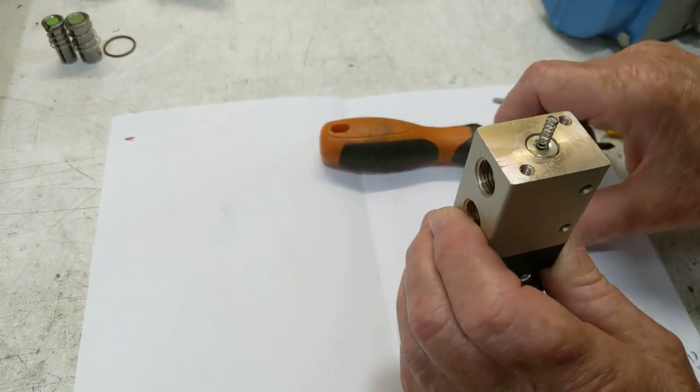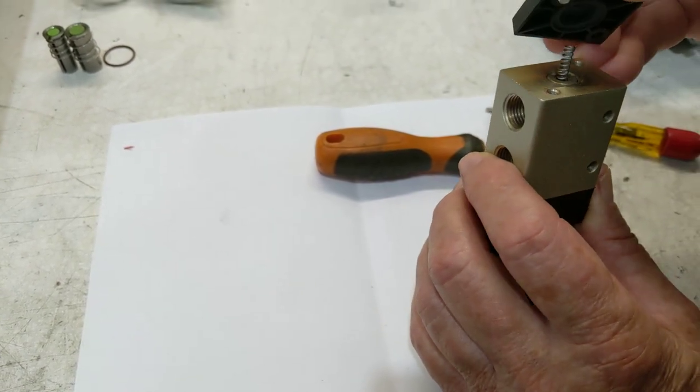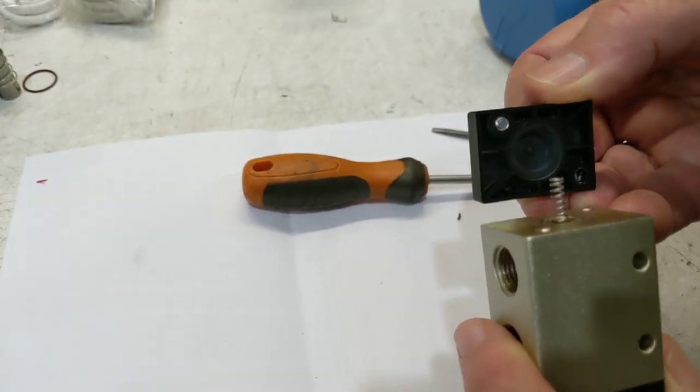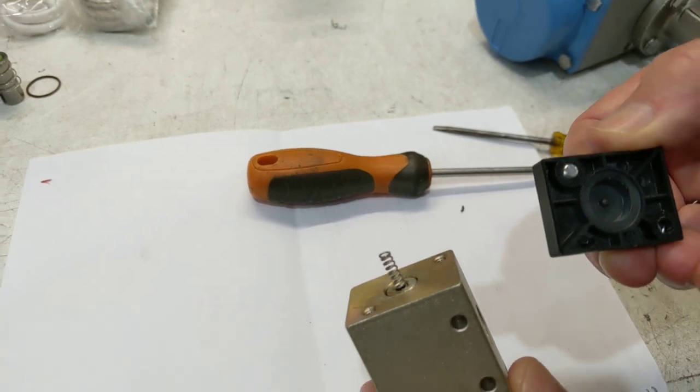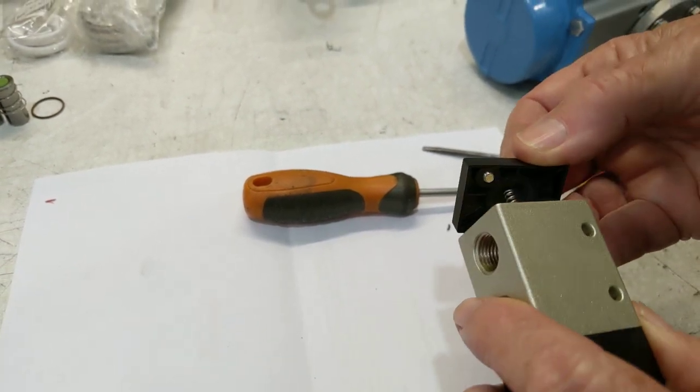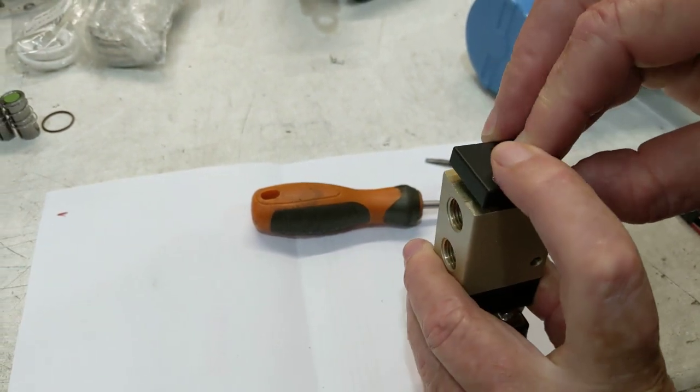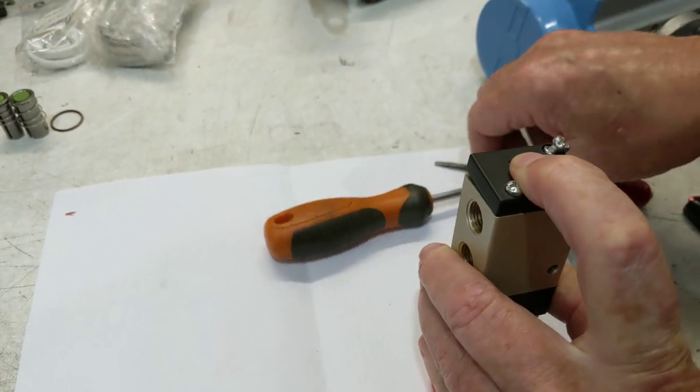The spring goes in here, and then we just make sure that goes into the end locator. Inside there's a little locator in the middle of this. The spring needs to go into that locator, and push this back and screw it back in.